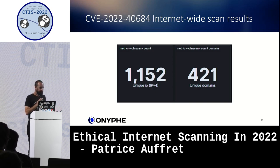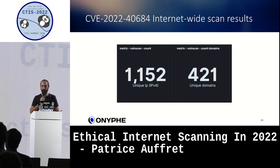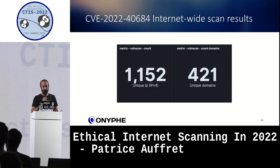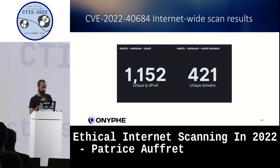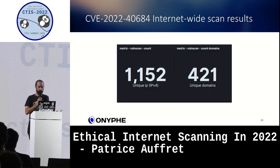Now for the results — which include some honeypots, to some extent. Not that many vulnerable devices. Remember, 1.1 million devices were tested, and it's roughly one per 1,000 — one per thousand vulnerable IP addresses. It's not that much.